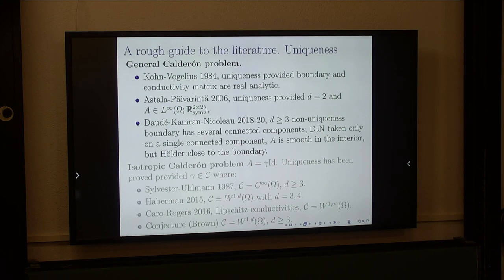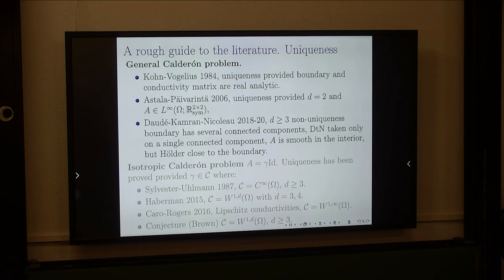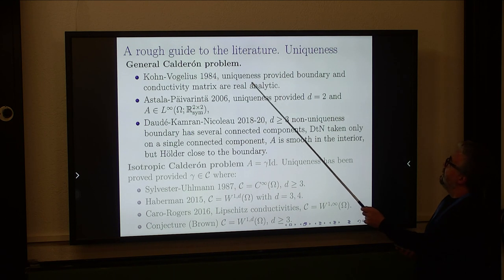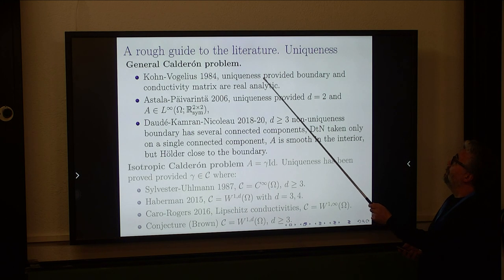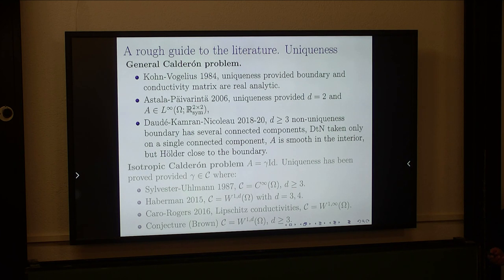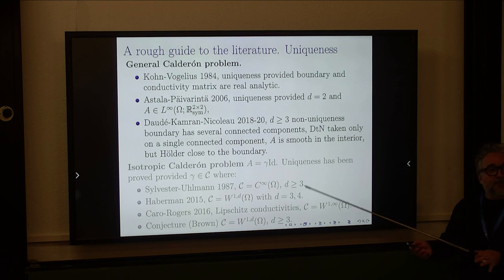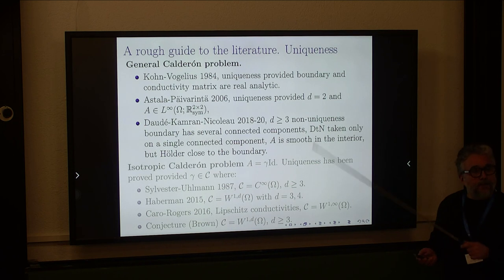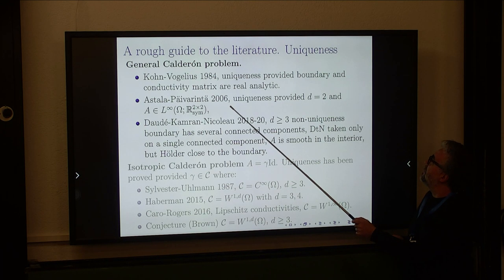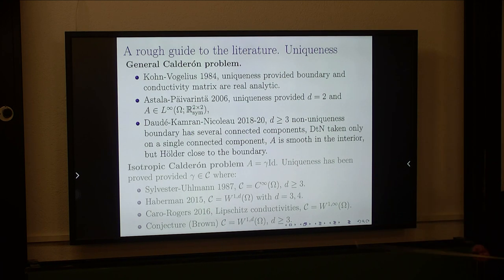I will give a very rough sketch of the literature because it is immense. The uniqueness aspect is known to be solved when everything is analytic. If everything is analytic, there is a result by Kohn and Vogelius that tells you the mapping phi is injective when you restrict to analytic conductivities with analytic boundary. Another interesting paper is by Astala and Päivärinta in 2006 — they solved the problem in dimension two with a very general class of conductivities.